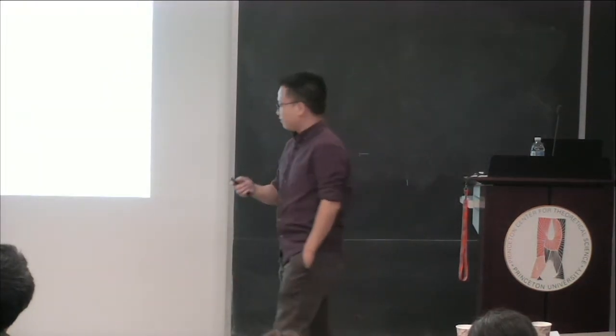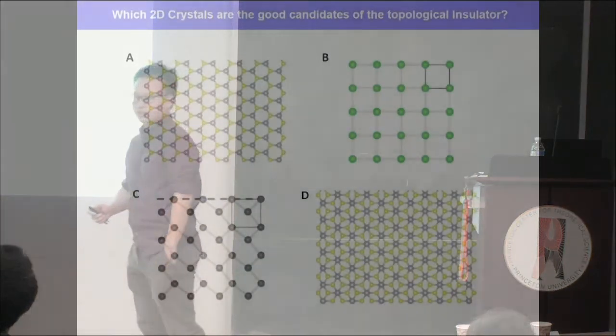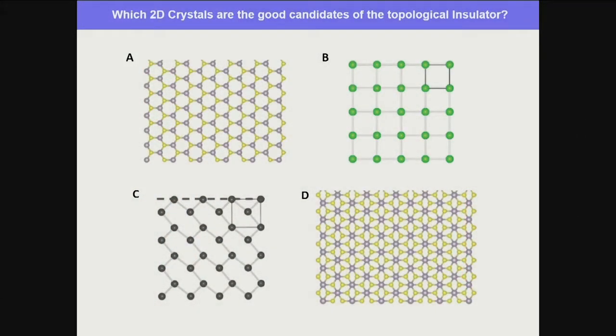My introduction will be oriented toward asking: if you want to discover new 2D or monolayer topological insulators, what kind of material do you want to look at? I'll give you three types of crystals where different colors mean different atoms and they have different crystal structures. Take 30 seconds to look at them and choose which ones you'd study for discovering new topological insulators.